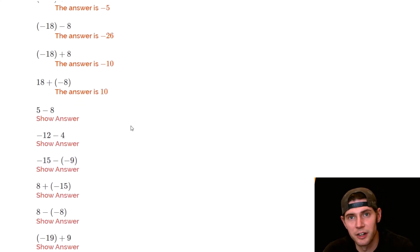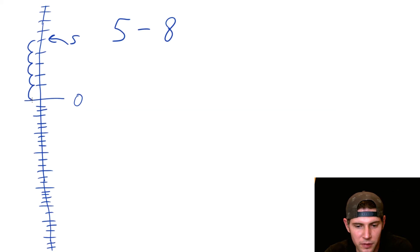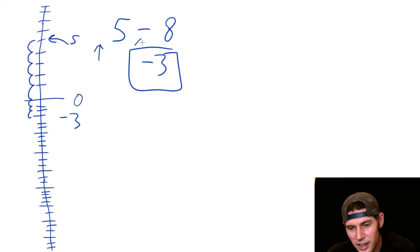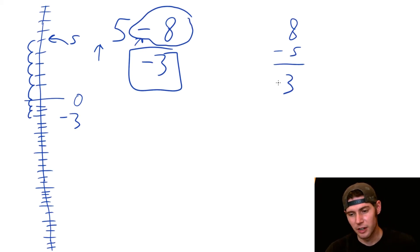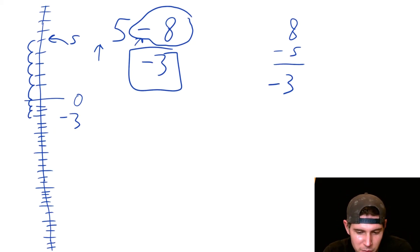Next: five minus eight. We start at five and then minus eight means go down eight: one, two, three, four, five, six, seven, eight. That gives us negative three. Another way: positive five and negative eight are working against each other, so eight minus five is three, and since the negative eight is larger it pulls it to negative three.